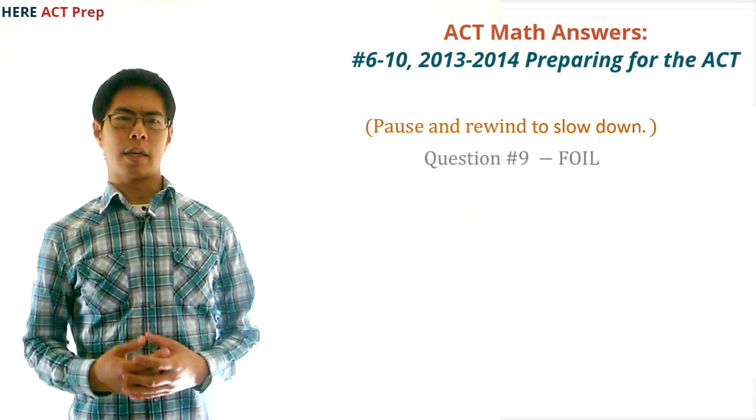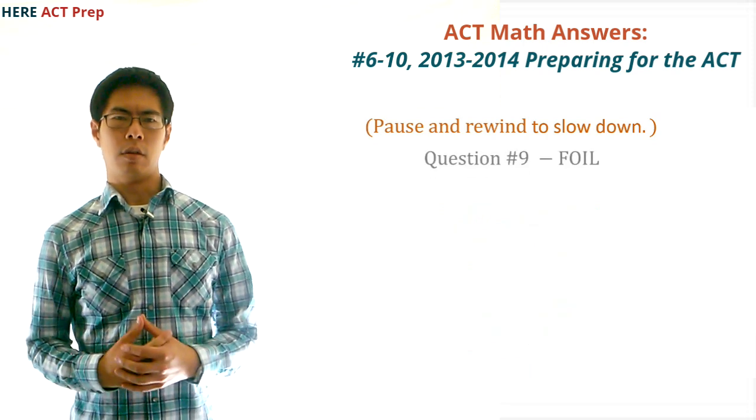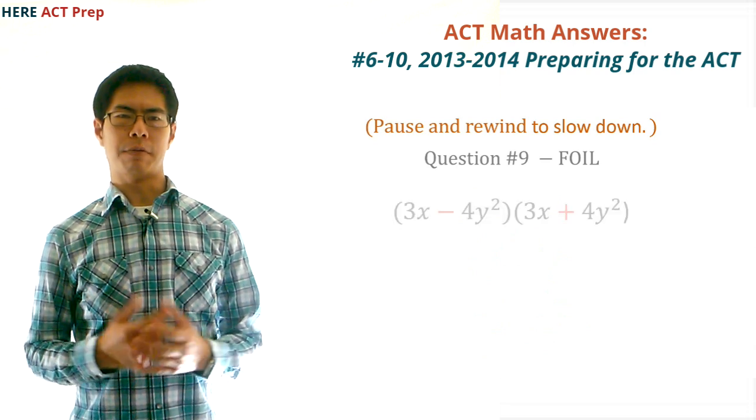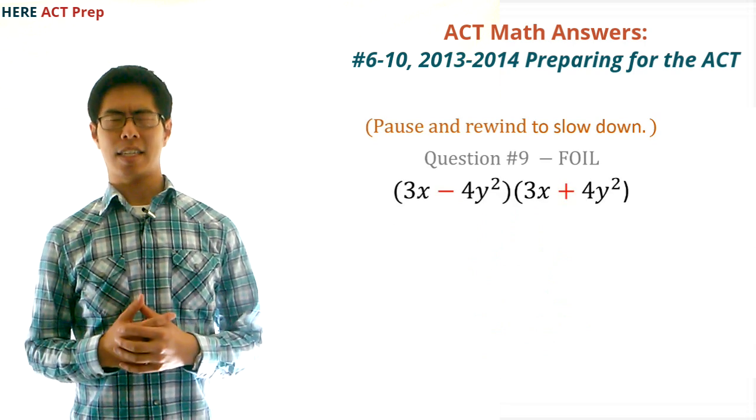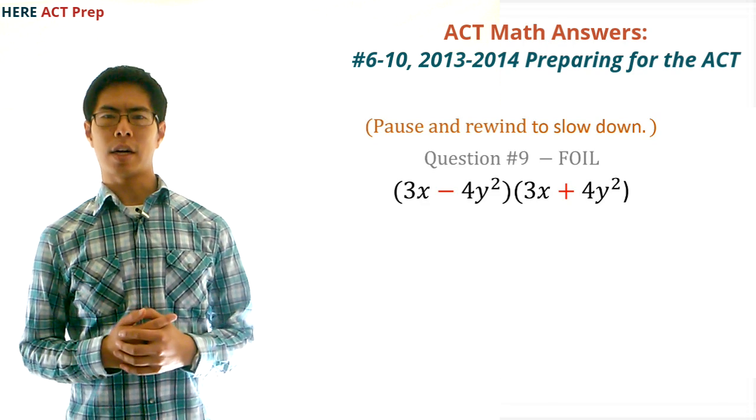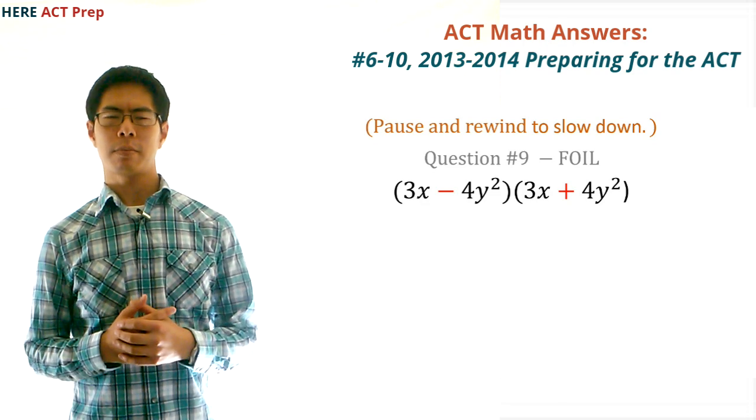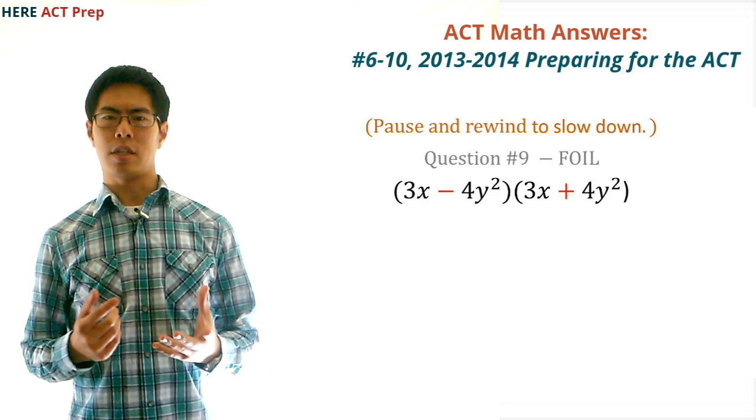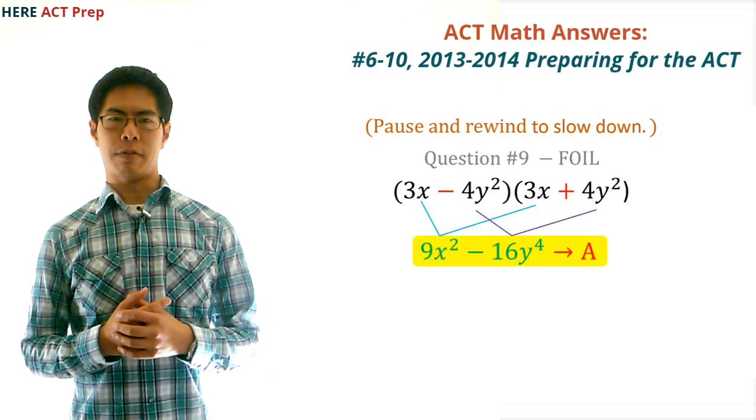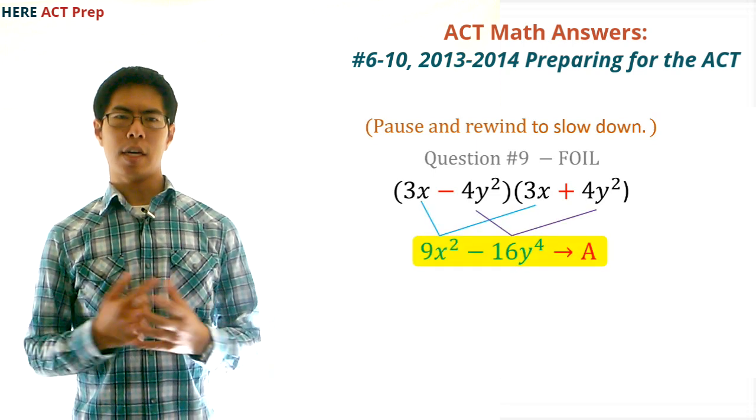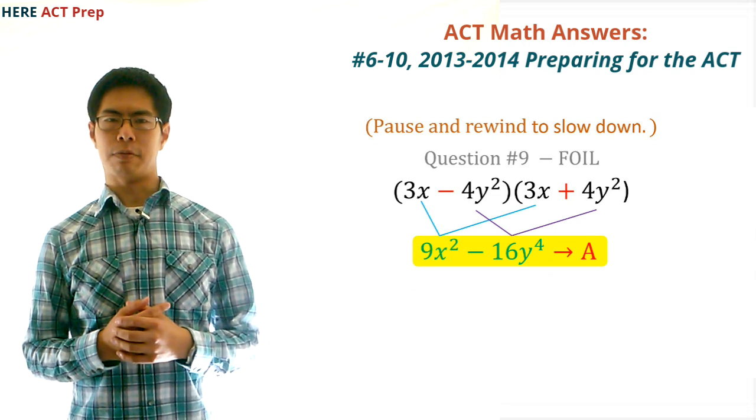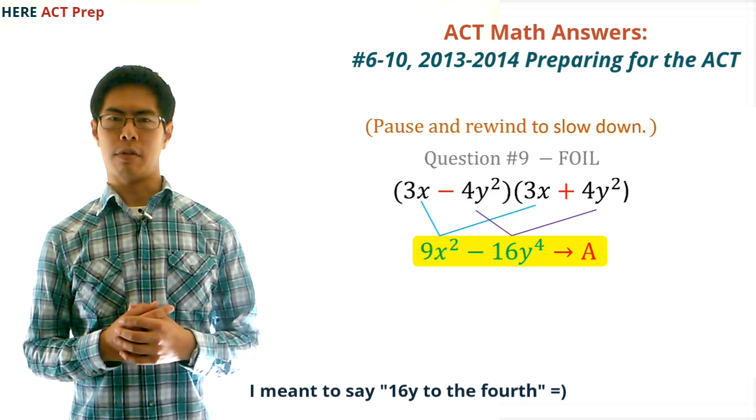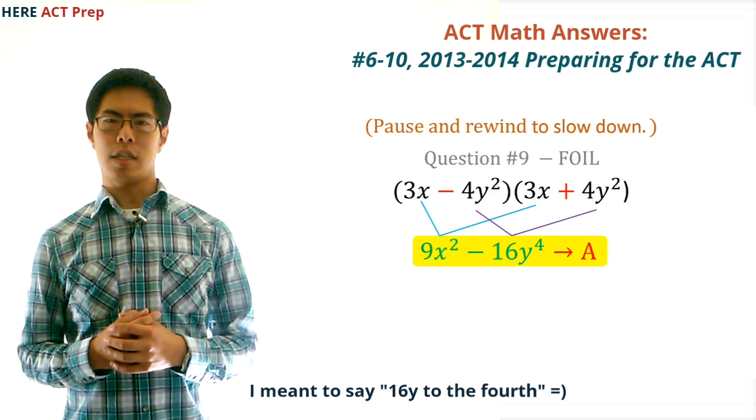Question number 9. The concept this question tests is FOIL, or multiplying binomial expressions. To do FOIL, we multiply by the first, then outside, then inside, then last. The trick to doing this question is to recognize that since we have a minus 4y squared and a plus 4y squared, the outside and inside will actually cancel each other out, which leaves us with just the first and the last, which will be 3x times 3x plus negative 4y squared times 4y squared, which is 9x squared minus 16y to the fourth. So, the answer is A.